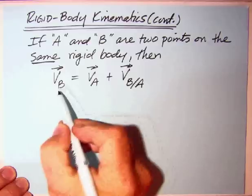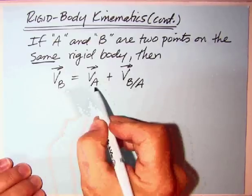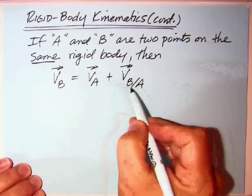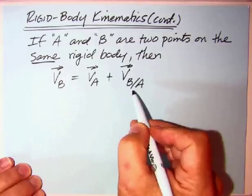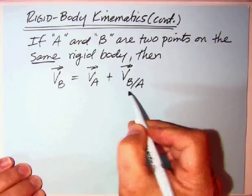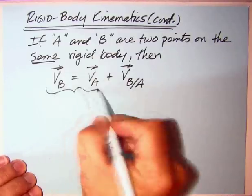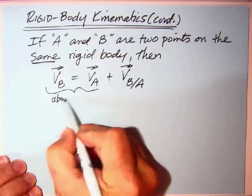What this says is the velocity of B equals the velocity of A plus the velocity of B relative to A as if A is fixed. And I'm going to write that out. But essentially, what you have here are absolute terms.